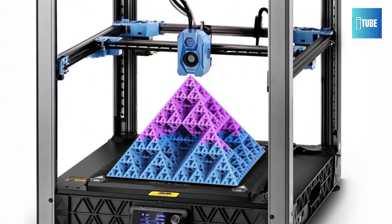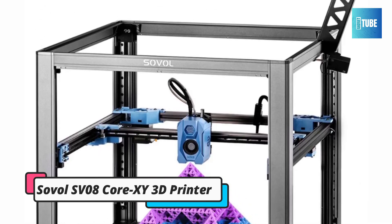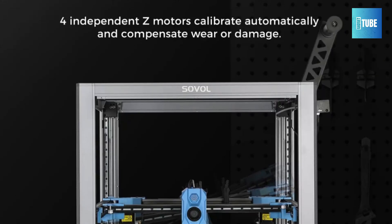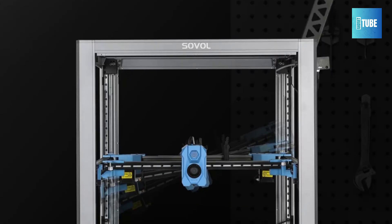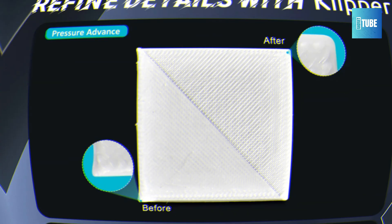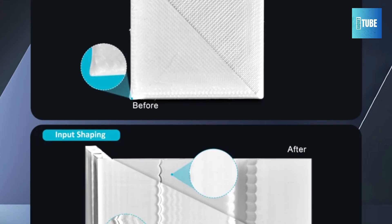Number 2. Sovol SV08 Core XY 3D Printer. The Sovol SV08 Core XY 3D Printer, an ideal choice for home users who want professional-level performance. With lightning-fast print speeds up to 700mm per second, it handles large projects quickly and precisely.